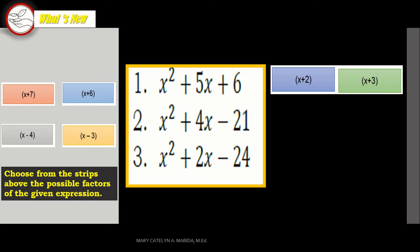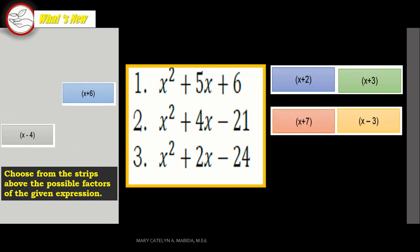Number 2: X squared plus 4X minus 21. Now this time, you solve it. Good job! That is X plus 7 and X minus 3.